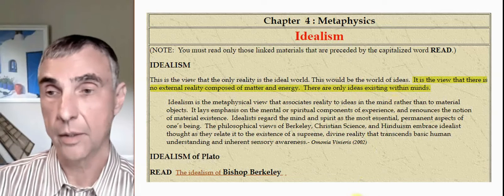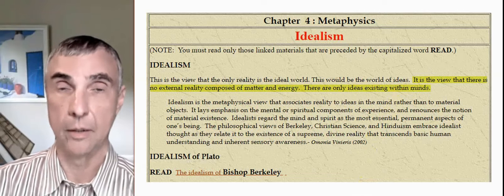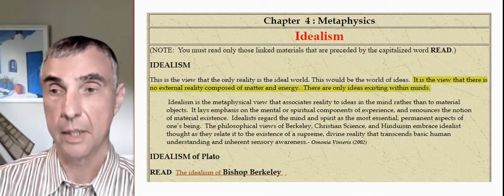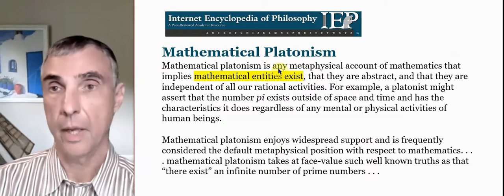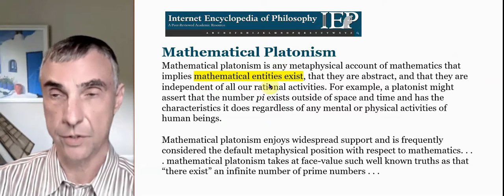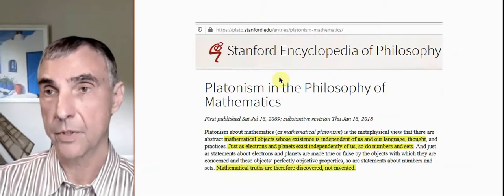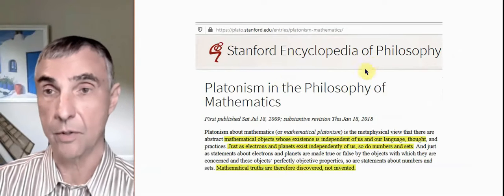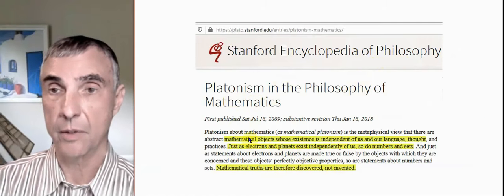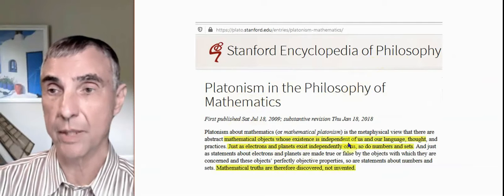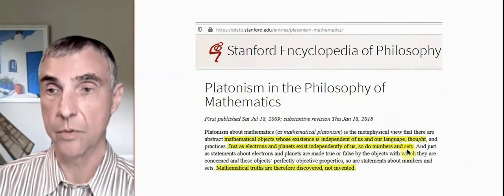I want to move on now to the idea that mathematics is discovered rather than invented. It's called mathematical Platonism. And mathematical entities really exist, and they're independent of us. They're really there. And Stanford Encyclopedia of Philosophy is an interesting source of a lot of philosophy. So mathematical Platonism, Platonism and the philosophy of mathematics, mathematical objects' existence is independent of us and our language and thought. Just as planets and electrons exist independently of us, so do numbers and sets.